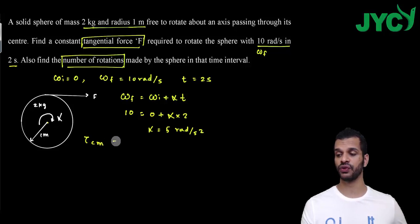Now as alpha is this, it means torque about center of mass is equal to moment of inertia about center of mass into alpha. Now alpha is here and I know moment of inertia. Moment of inertia of solid sphere is 2/5 m r squared into alpha.